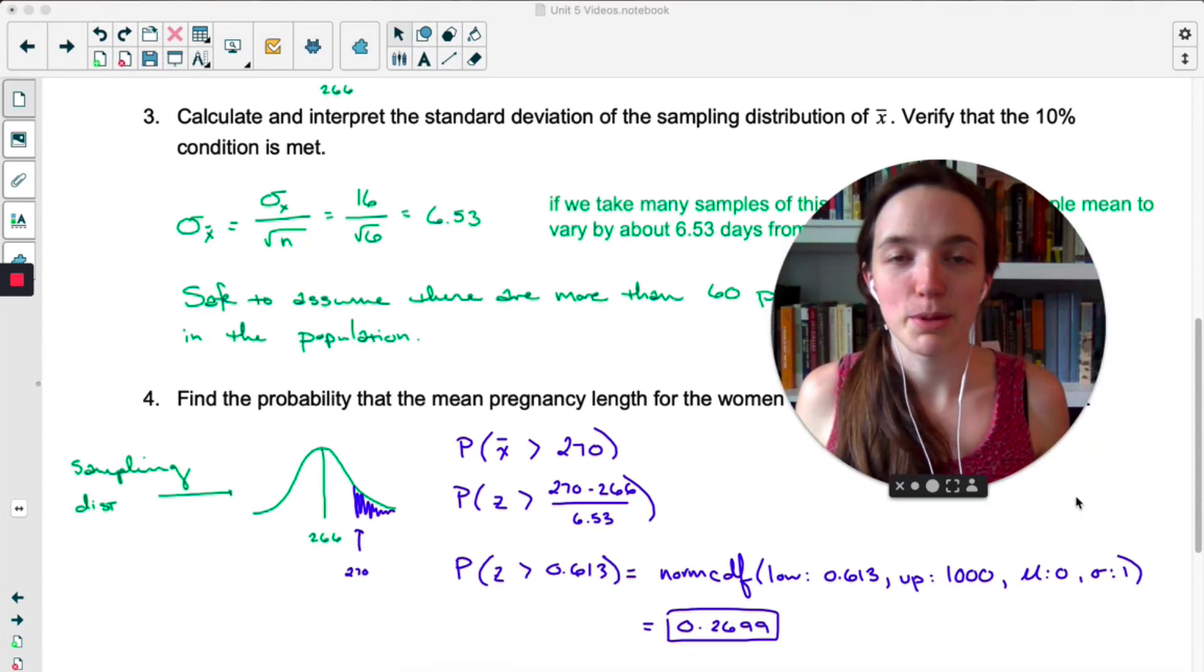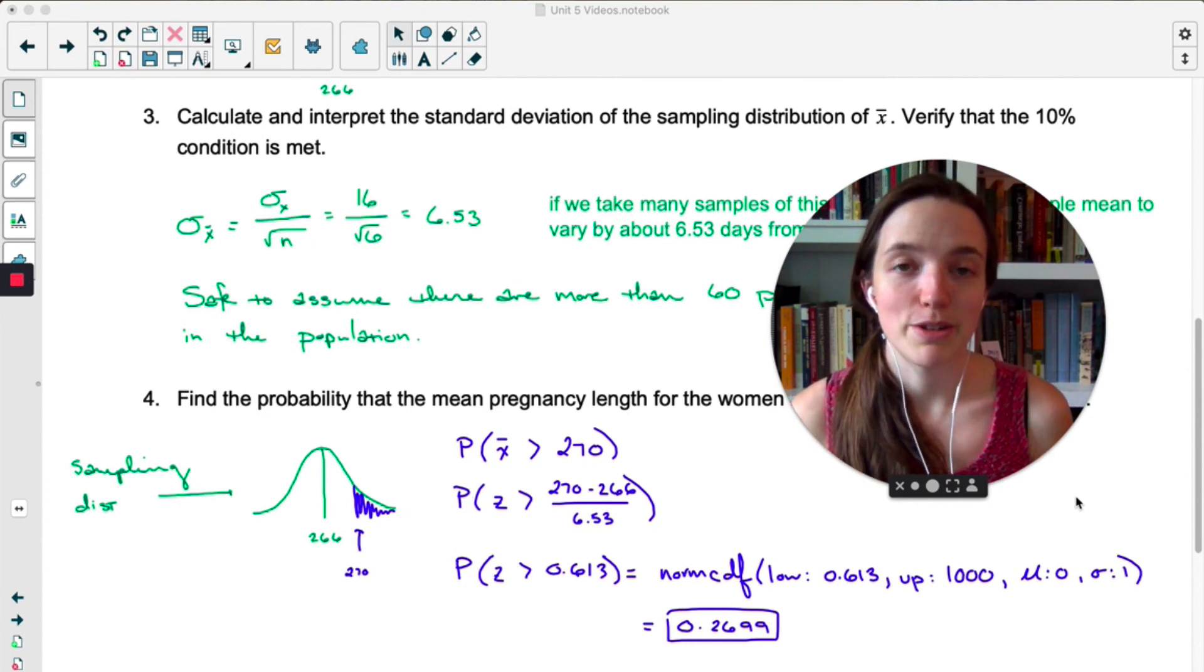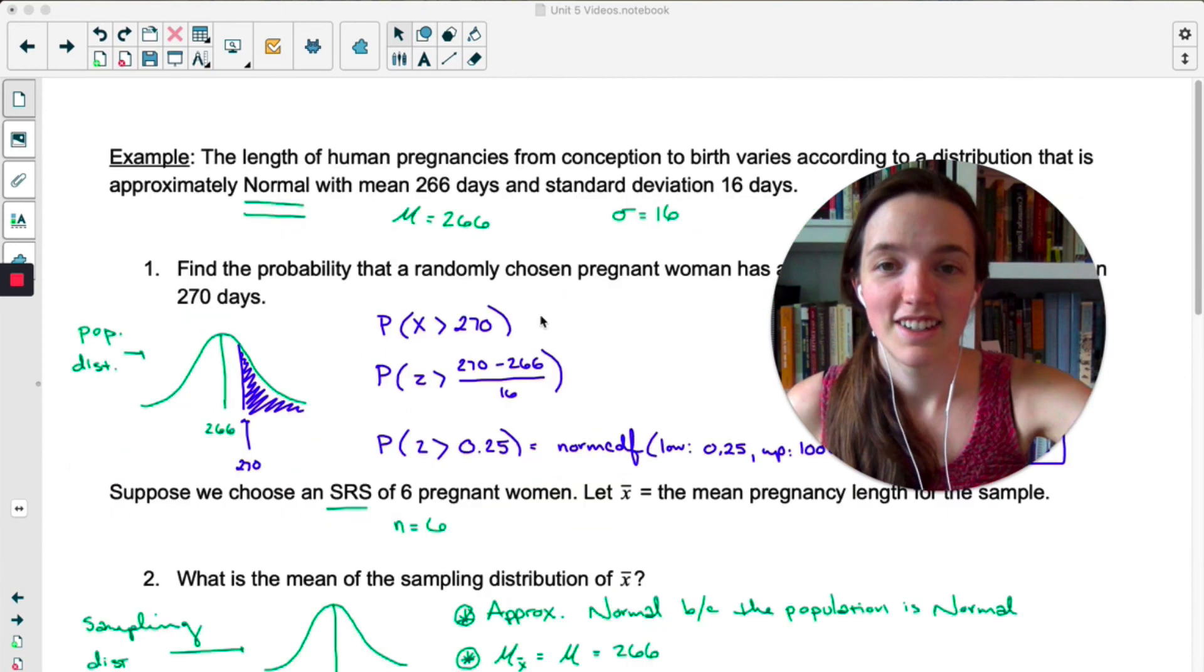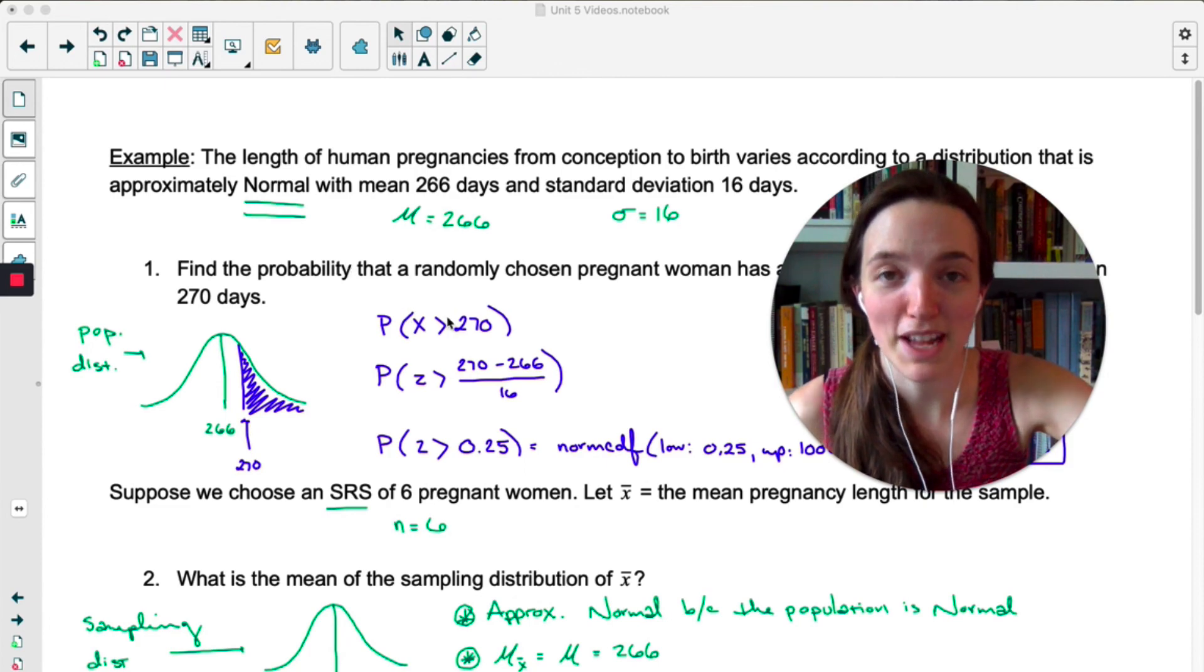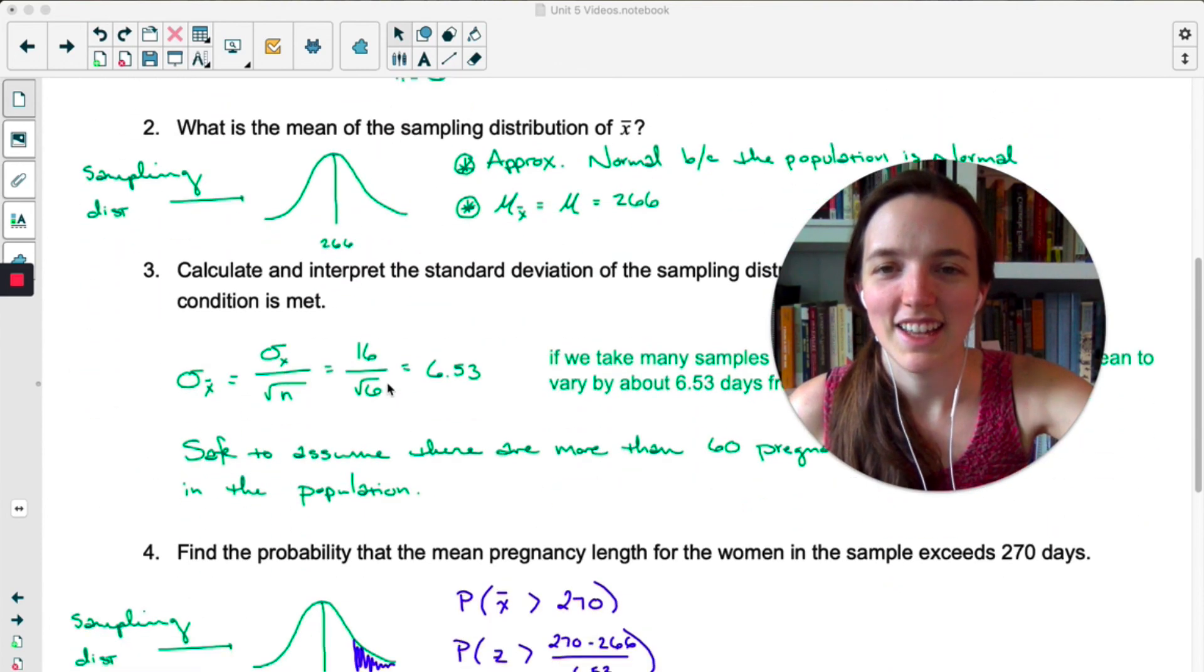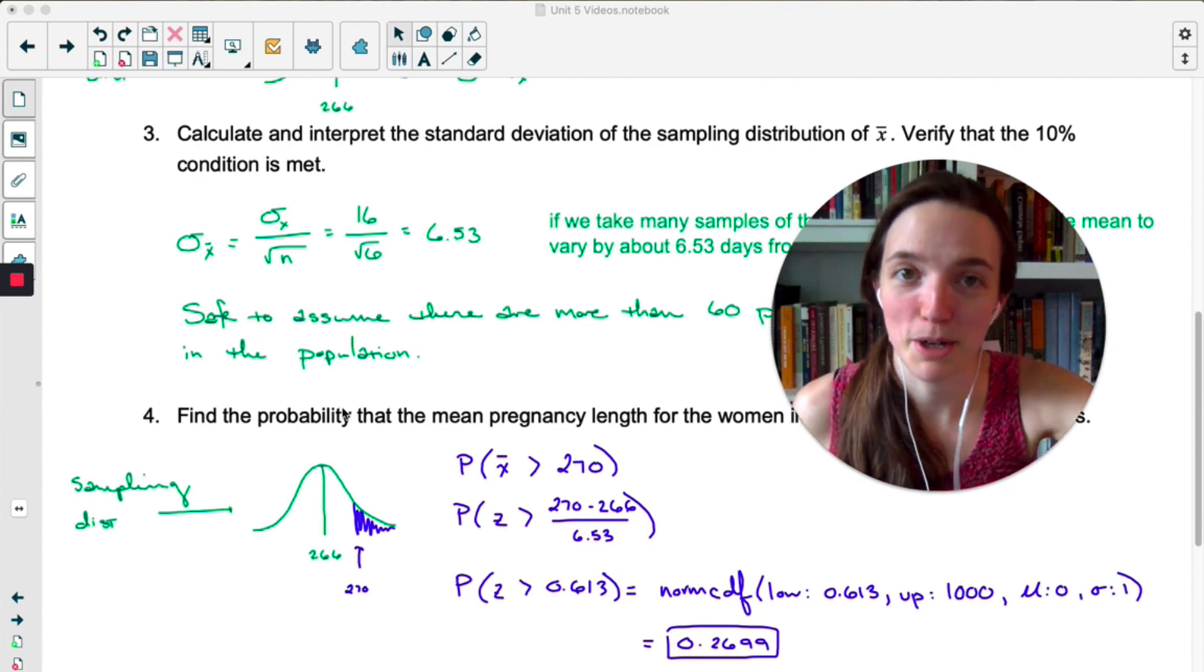So easily, the place where students get most tripped up when they deal with means is distinguishing between x and x-bar. Which is why, if I were you, I would do things like circle the word in number one, find the probability that a randomly chosen pregnant woman, circle that, and write down x before you forget. And in a problem like this one, circle the word mean and write down x-bar before you forget.